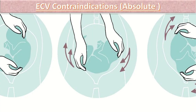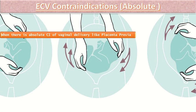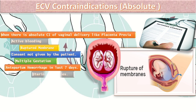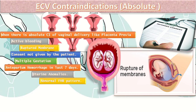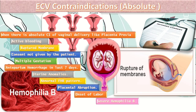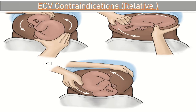What are the contraindications of external kephalic version? The absolute contraindications include when there is an absolute contraindication to vaginal delivery, such as in cases of placenta previa. Secondly, when there is active bleeding or ruptured membranes, consent not given by the patient, multiple gestation, antepartum hemorrhage in the last seven weeks, uterine anomalies, abnormal fetal heart rate pattern, placental abruption, onset of labour, and severe haemophilia B.